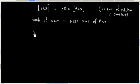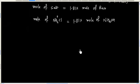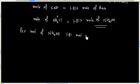And now for this buffer, ammonium chloride is the salt, ammonium hydroxide is the base. So we can say per mole of ammonium hydroxide, 1.81 moles of ammonium chloride is needed.